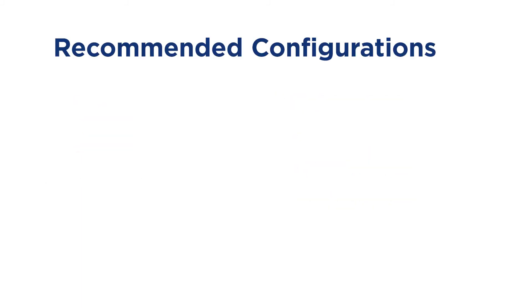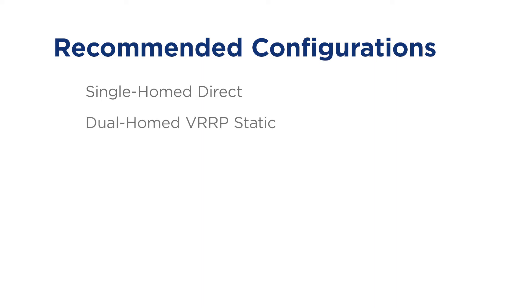Recommended configurations: Single-homed direct — use this for out-of-band communications channel. Dual-homed VRRP static — use this for primary or non-dynamic internet service. Single-homed BGP — use this for secondary or dynamic internet service.